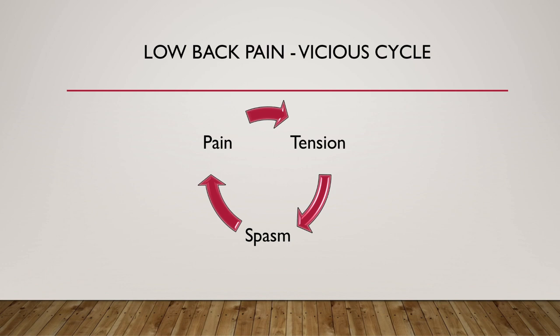An example of a spasm is a cramp. With the vicious cycle, we have more pain — that increases tension and possibly spasm. Tension and spasm, in return, are sources of pain, so they feed back into the original pain, increasing the pain and discomfort. And then there is more pain, there is more tension and spasm, and that cycle can circle, feed on itself, and accelerate.